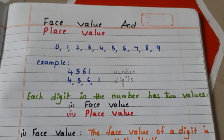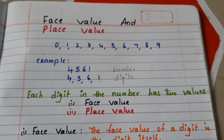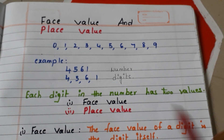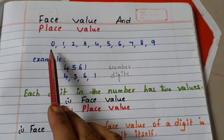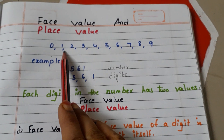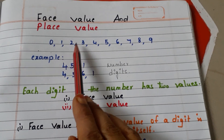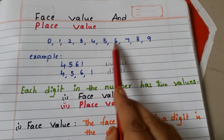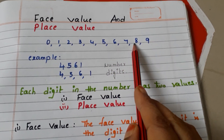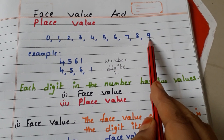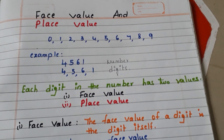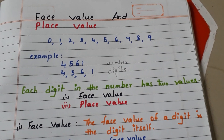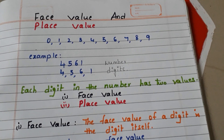We all know that basically numbers are formed with 10 digits, and those digits are 0, 1, 2, 3, 4, 5, 6, 7, 8, and 9. We can write numbers either big or small by using these digits.